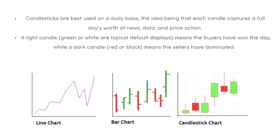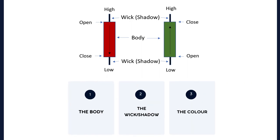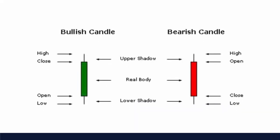It has three basic features: the body, which represents the open-to-close range; the wick or shadow, that indicates the intraday high and low; and the color, which reveals the direction of market movement. A green body indicates a price increase, while a red body shows the price decreasing over time. Individual candlesticks form patterns that traders can use to recognize major support and resistance levels. There are a great many candlestick patterns that indicate an opportunity within a market. Some provide insights into the balance between buying and selling pressures, while others identify continuation patterns or market indecision. As you can see, the red bar indicates the price closed lower than it opened, and a green bar means the price closed higher than it opened. The colors vary according to the charting platform, but red and green are fairly standard.